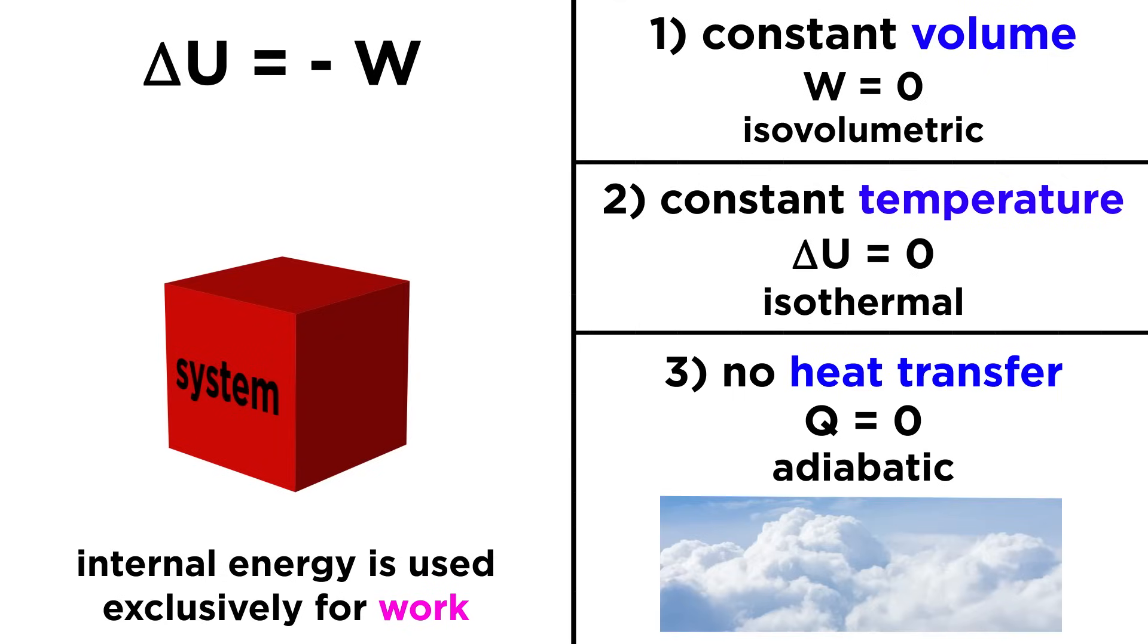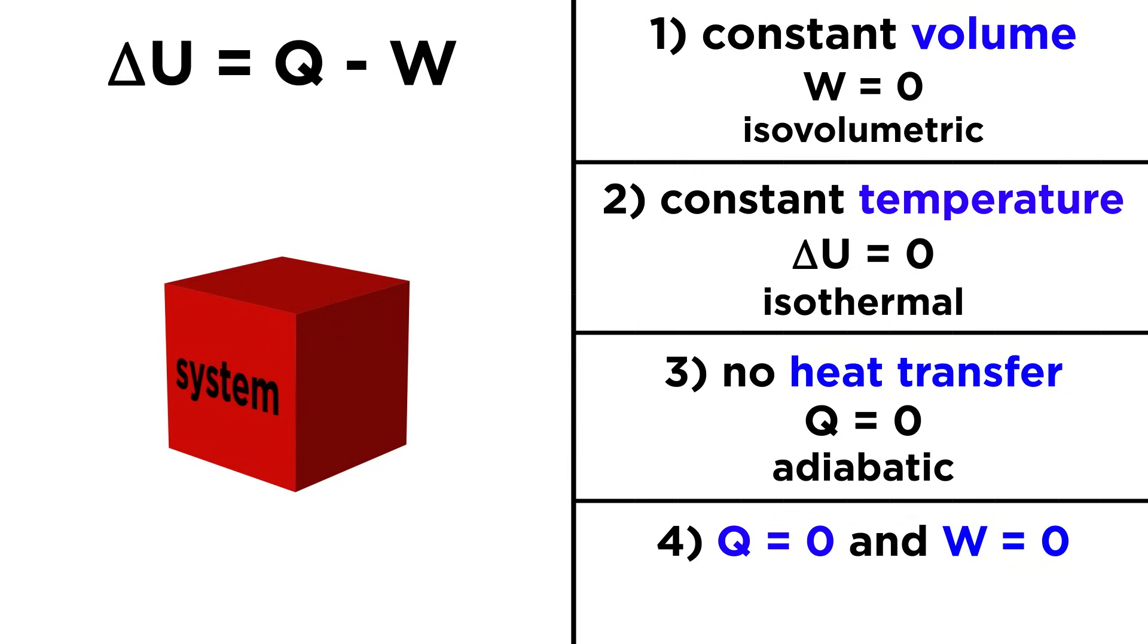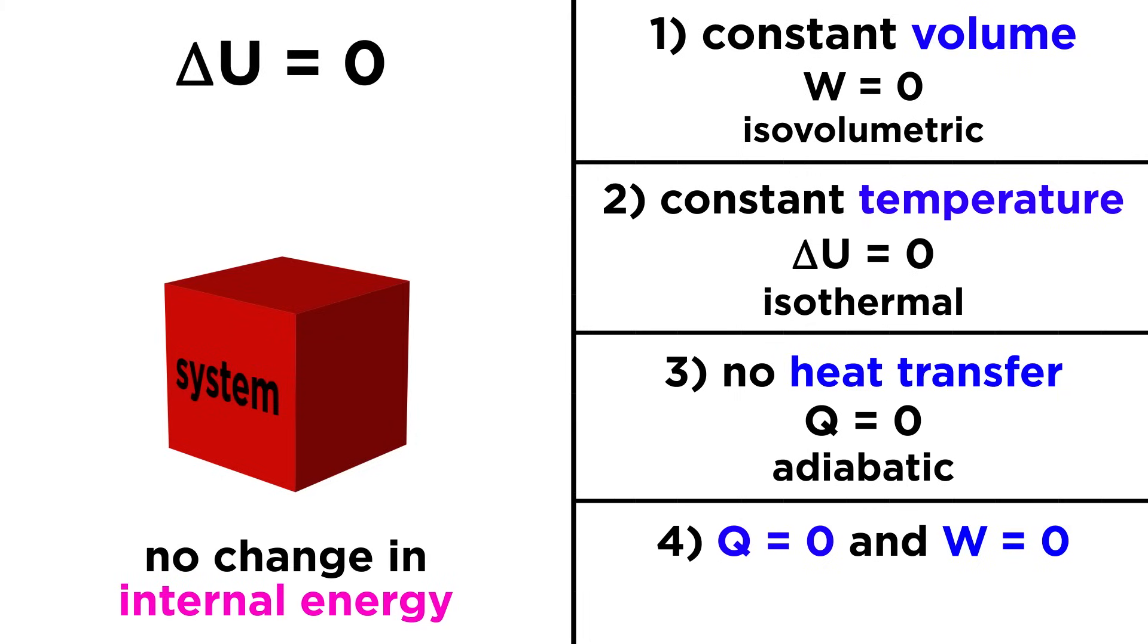We can see this in certain processes in Earth's atmosphere, as masses of air change position due to pressure differences. And if Q and W are both zero, meaning there is no heat transfer and no work done, there can be no change in internal energy, and this must be an isolated system.